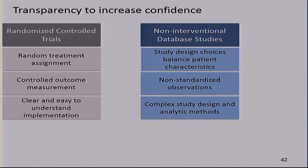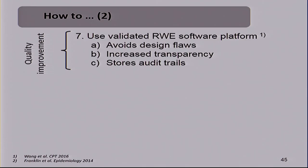As a reminder: non-interventional database studies require all sorts of study design choices and complex statistical analyses in order to mimic the randomization part of the randomized trial. We have to deal with non-standardized observations, and we have our little tricks. But in the end it's a very complex study report, and we have to do a better job communicating these. You want to avoid design flaws, increase transparency, and have audit trails so the regulator can see exactly what you did at each stage and findings become reproducible.